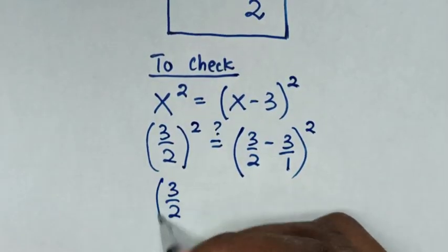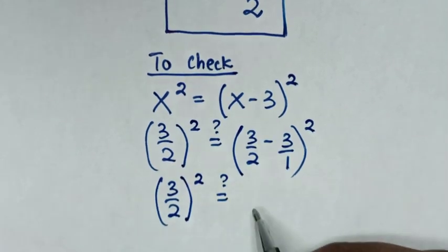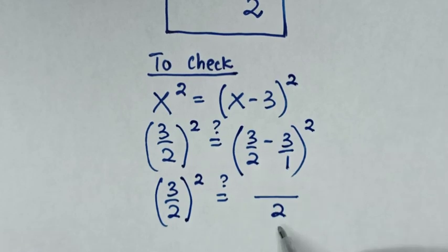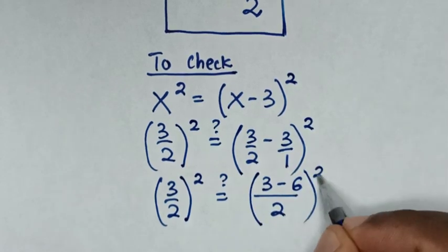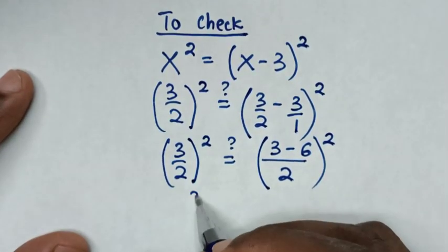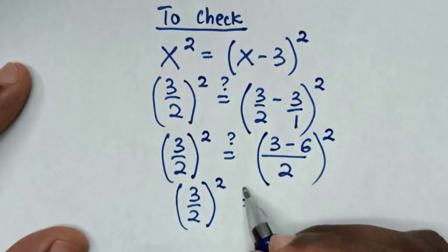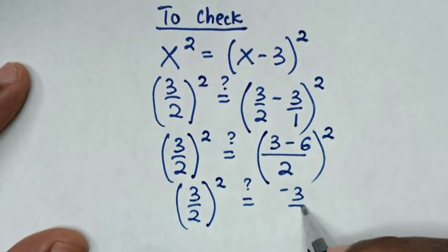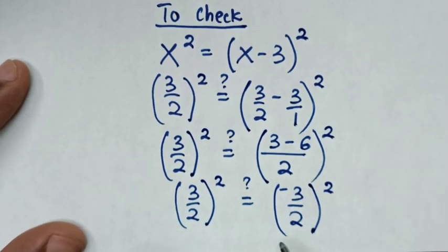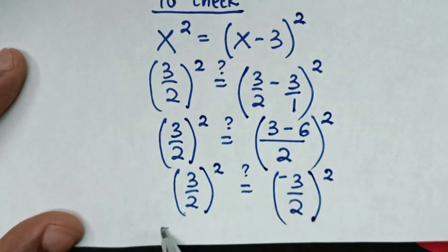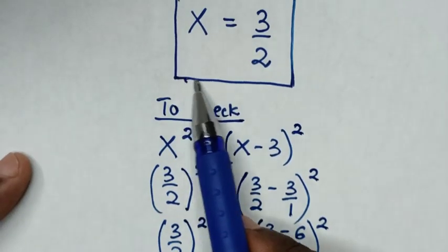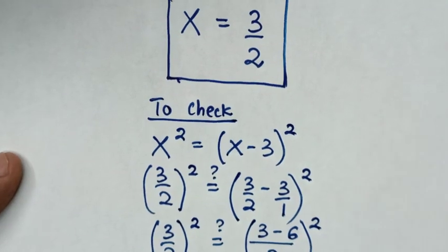So it will be 3 over 2 bracket squared, is it equal to — the common denominator of 2 and 1 is 2, so 2 divided by 2 is 1, times 3 is 3; and 2 divided by 1 is 2, times 3 is 6, giving minus 6, so we get 3 minus 6 bracket squared. That simplifies to negative 3 over 2, bracket squared. Since 3 over 2 squared equals negative 3 over 2 squared, because a negative squared is positive, the left side and right side are equal. Therefore it is true that x is equal to 3 over 2. Thank you for watching.